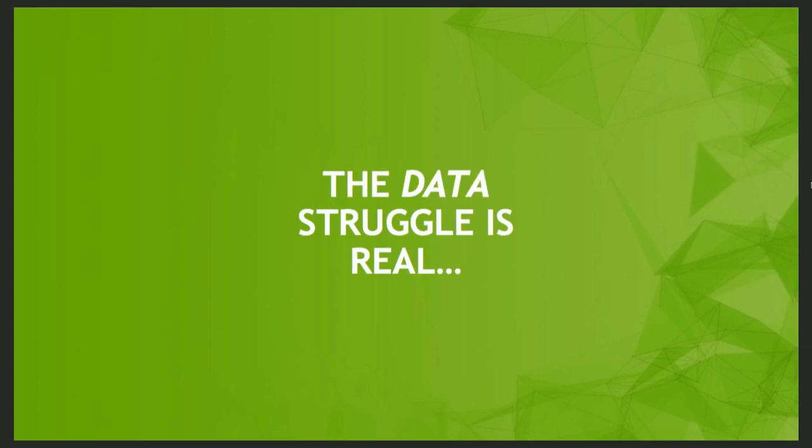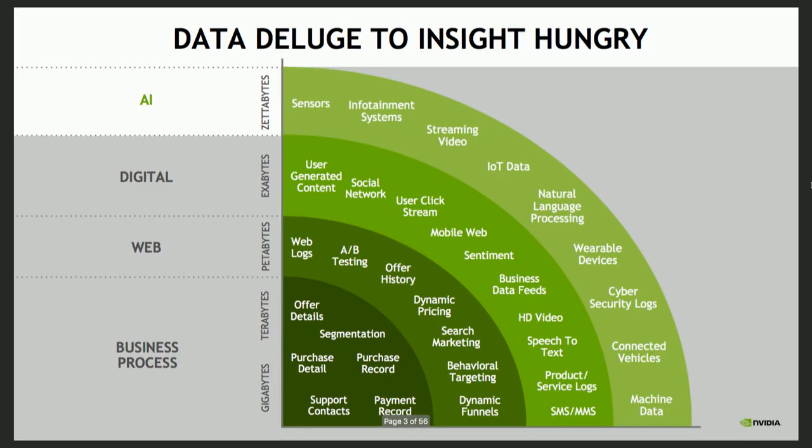I want to give a quick background, and then Keith's going to talk more about the implementation. The data struggle is real — data is growing rapidly, and people want to start doing more elaborate analysis of their data. This is a great use of GPUs: when you have more data and want to do things in parallel, the GPU is ideal hardware for it. GPU performance is continuing to grow while CPU performance is starting to plateau off.